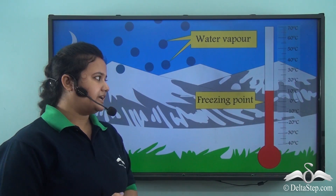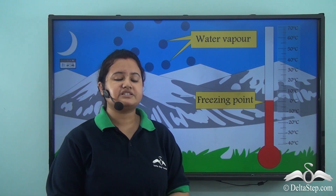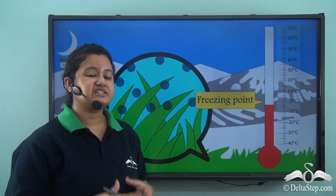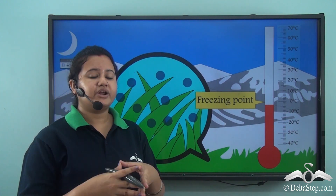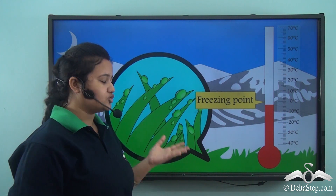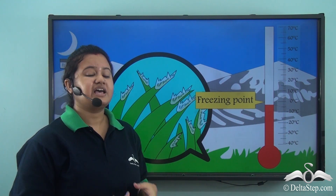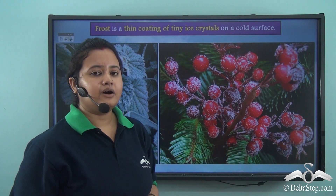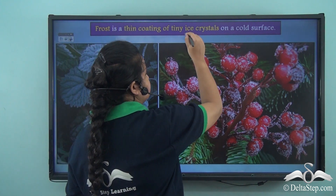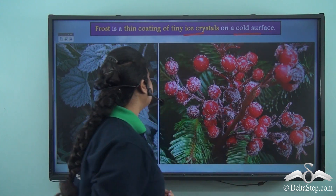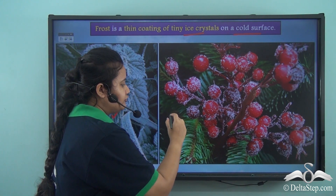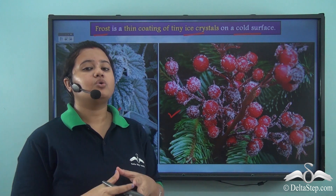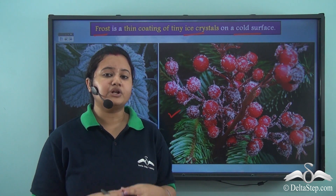Sometimes on cold winter nights the temperature drops below freezing point. During such times, the warm moist air lying just above the earth's surface freezes immediately. The water vapour present in the atmosphere condenses into dew drops on coming in contact with a cold surface, and these dew drops immediately transform into ice crystals. These tiny ice crystals formed on cold surfaces like leaves or fruits and berries are known as frost. Frost is very common in cold countries when the temperature is below freezing point.